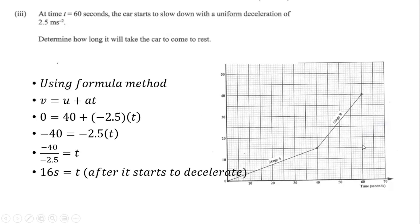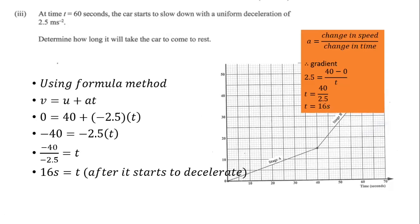The overall time for the car to come to rest is 16 + 60 = 76 seconds. Alternatively, using acceleration = change in speed / change in time: 2.5 = (40 − 0) / t, giving t = 16 seconds — the same result. That concludes this video; see you in question nine.